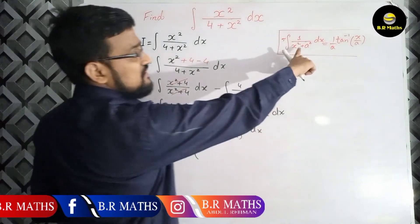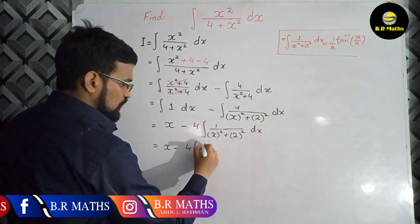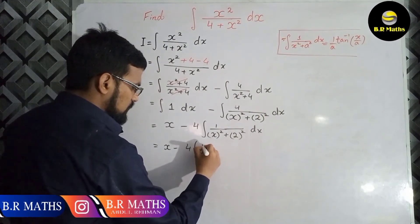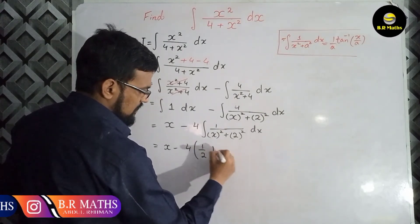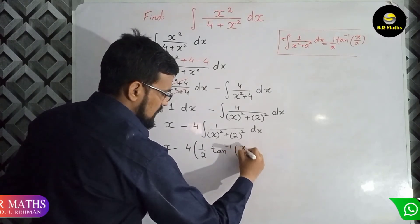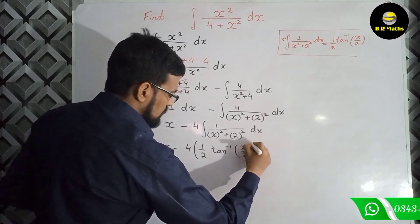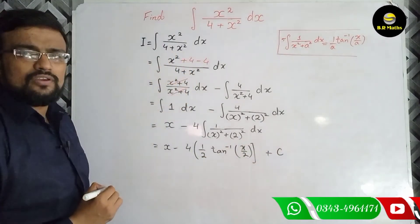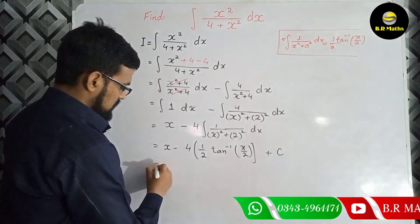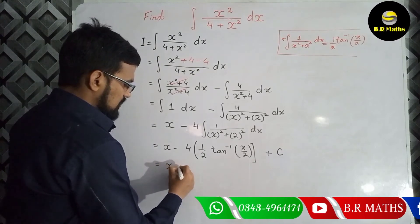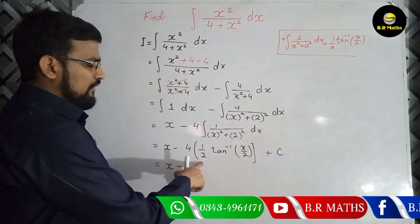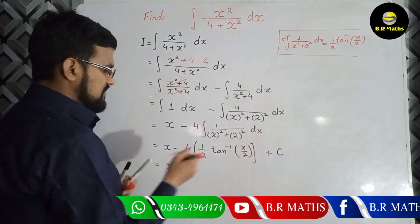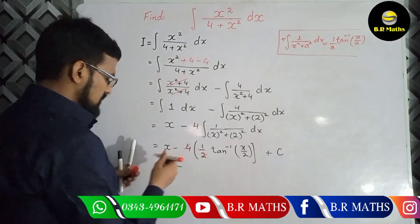C for any constant. Now x minus 4, and 1 over 2. 4 cancels with 2, and it becomes simply 2, and tan inverse x divided by 2 plus c.